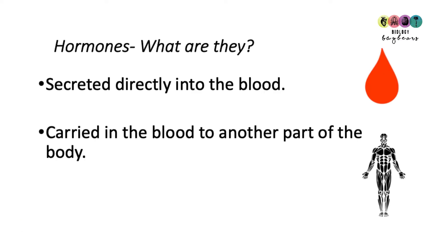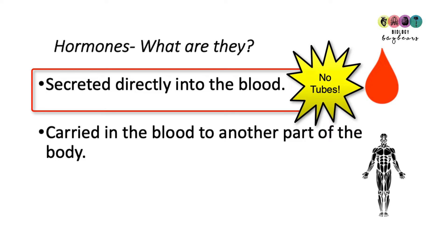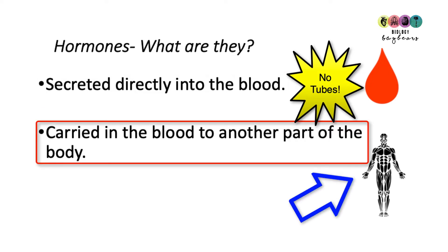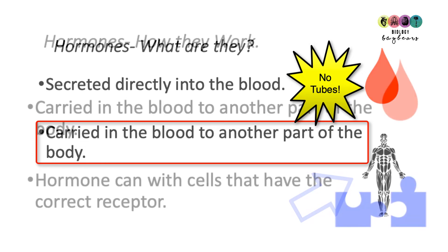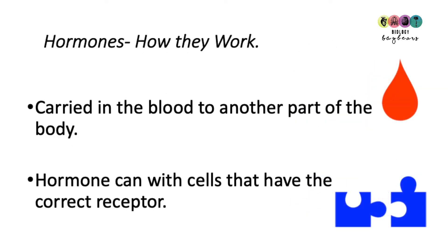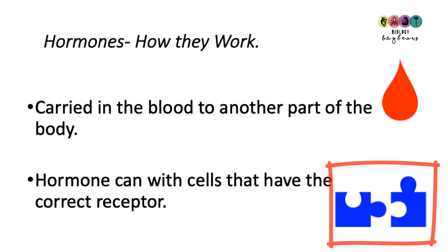One of the important things about hormones is that they are secreted directly into the blood. Whatever gland produces them just secretes them directly into the blood — there are no tubes, no ducts. From there they are carried to some part of the body where they have some type of effect. Hormones are transported in the blood to particular destinations, and when they reach those destinations they can only interact with cells that have a complementary receptor — a bit like a jigsaw.